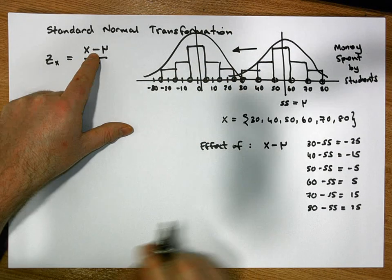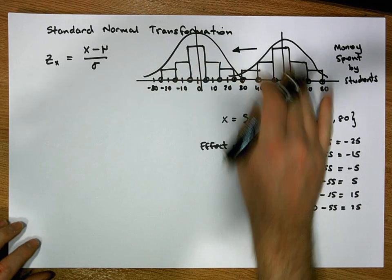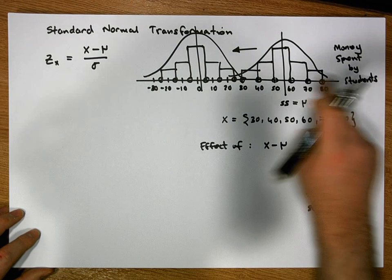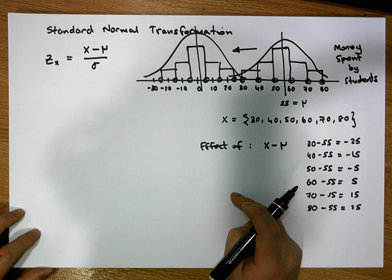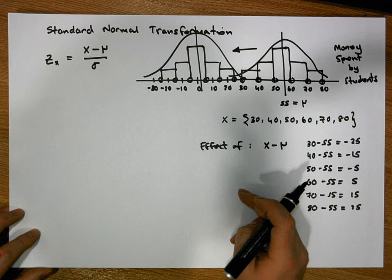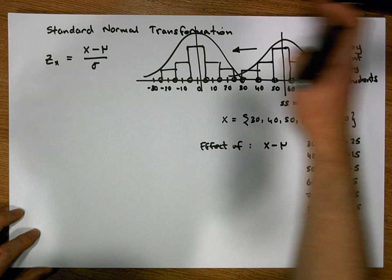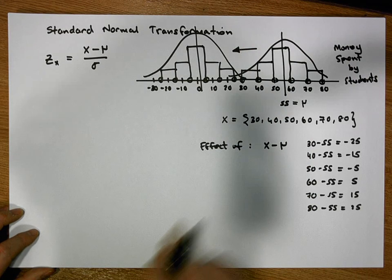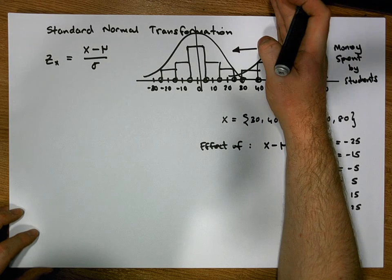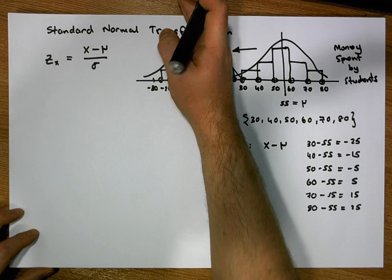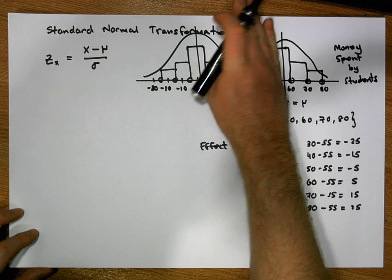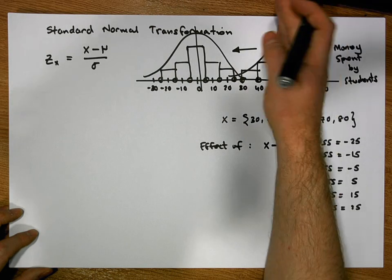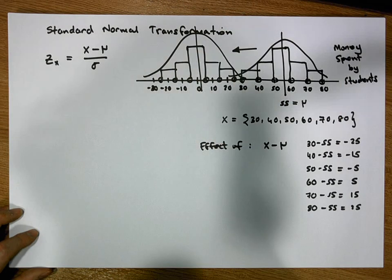This doesn't matter where the distribution is positioned along the axis — the effect is the same. The center point of the distribution shifts down over zero, all values less than the mean become negative, and all values greater than the mean become positive.